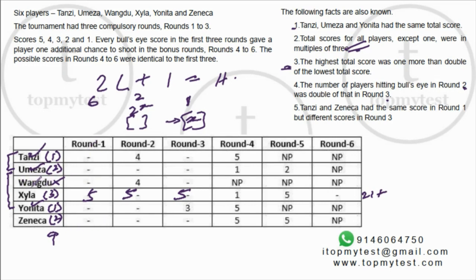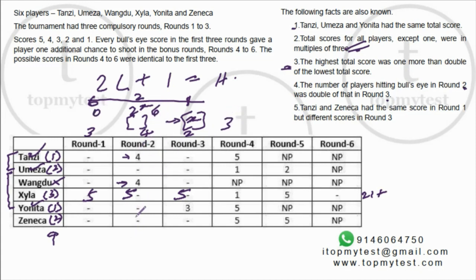So x=1 is not possible. If x=2, round two has 4 bullseyes and round one has 3 bullseyes — this works since two players scored 4 in round two, leaving four players to score 5. x=3 would require 6 bullseyes in round two, but two players already scored 4 in that round, so only 4 can hit bullseyes — contradiction. Therefore: round one has 3 bullseyes, round two has 4 bullseyes, and round three has 2 bullseyes. All four non-4-scorers in round two hit bullseyes.